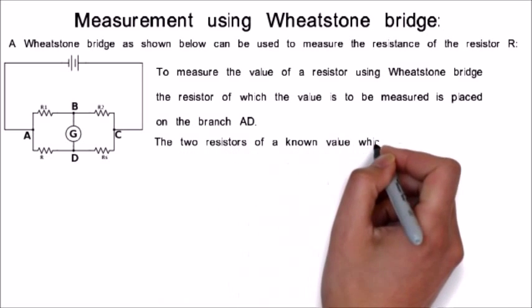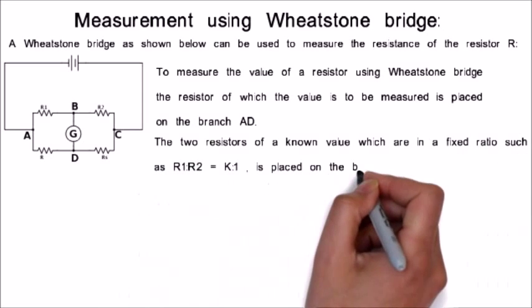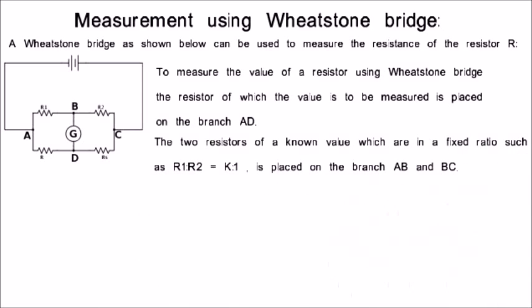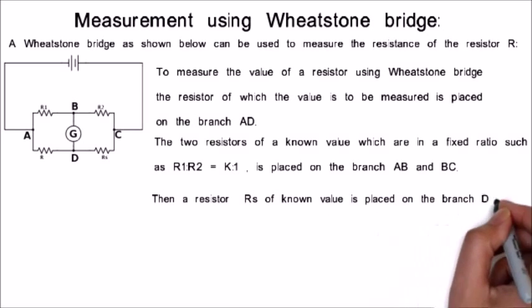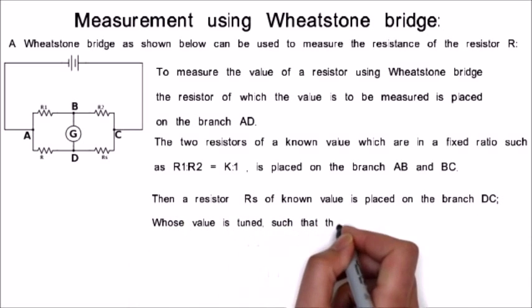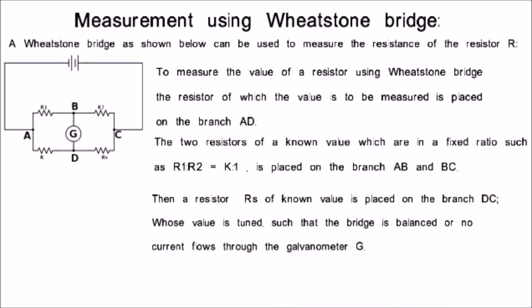The two resistors of a known value which are in a fixed ratio such as R1 to R2 equals K to 1, is placed on the branch AB and BC. Then a resistor RS of known value is placed on the branch DC, whose value is tuned such that the bridge is balanced or no current flows through the galvanometer G.